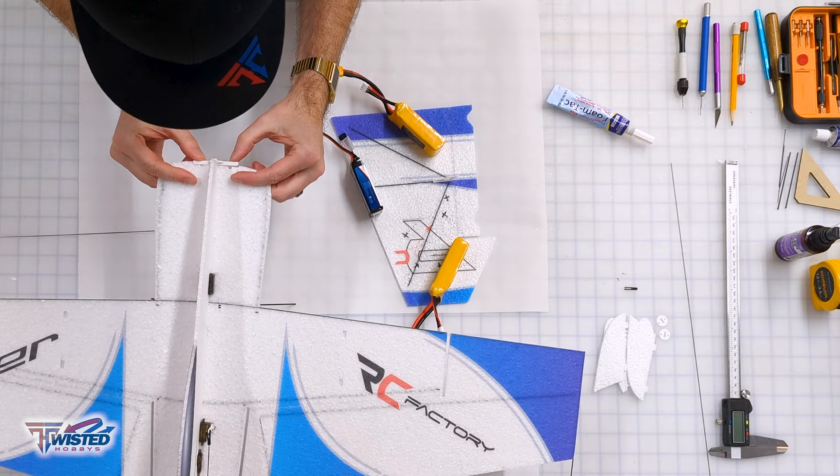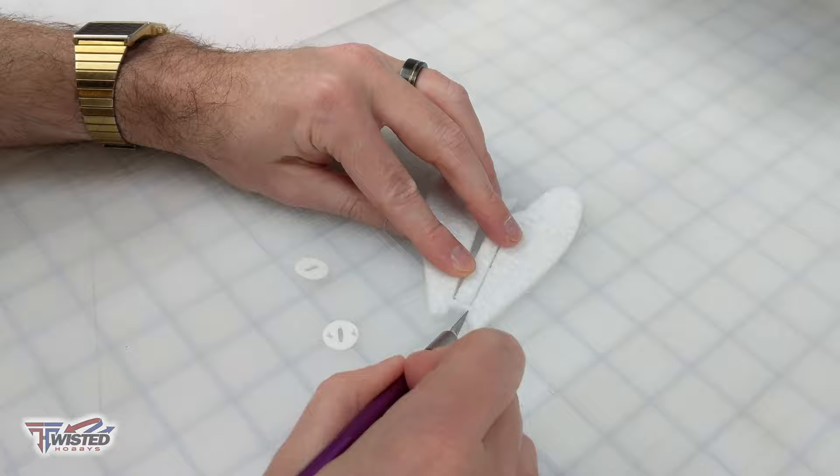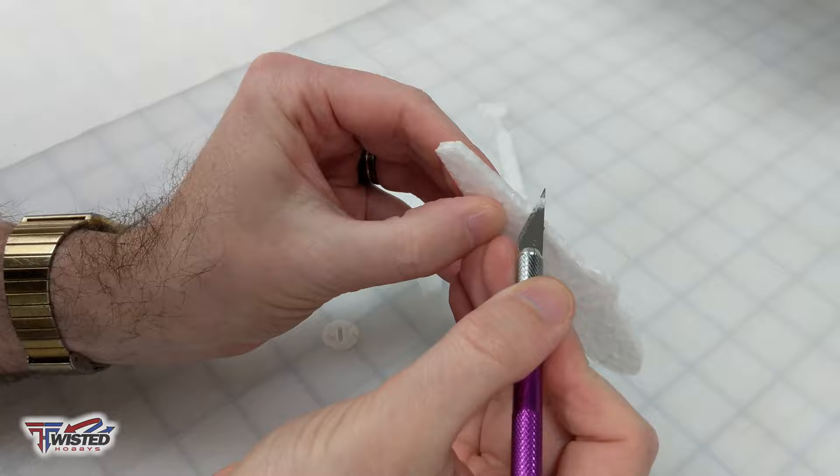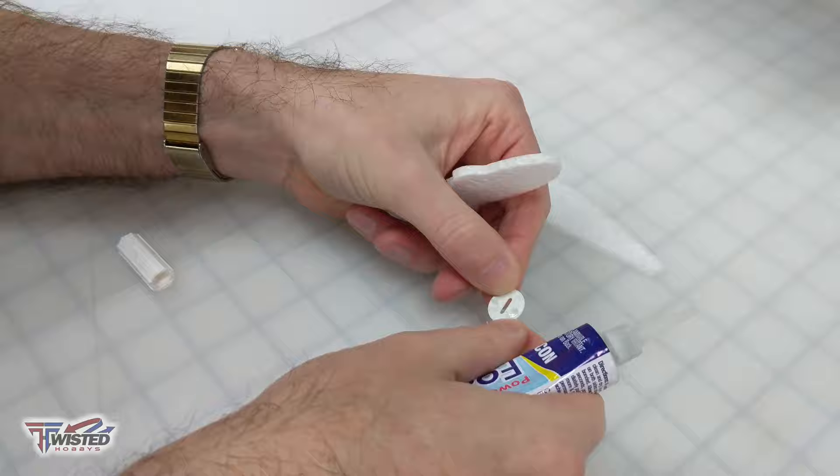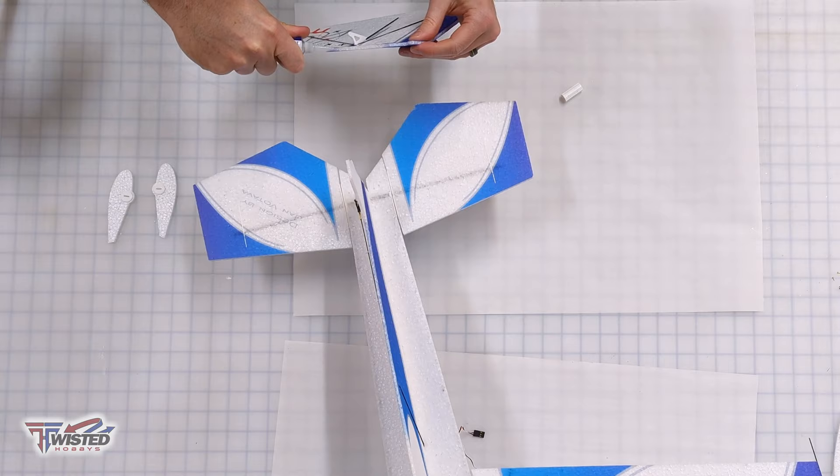While that's drying that's a good time to put on our motor mount and work on the landing gear. When I started cutting out these wheel pants I realized that my exacto blade wasn't very sharp so I went and got a new one and these plastic pieces glue right into the wheel pants.